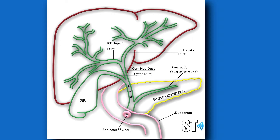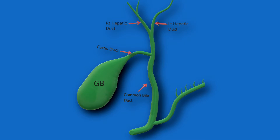The liver has all these bile ducts that converge into the right and left hepatic duct. That then meets with the cystic duct, which is a duct that comes from the gallbladder. The confluence of that becomes the common bile duct, which then leaves the liver along with the portal vein and hepatic artery — well, the portal vein and hepatic artery are entering the liver, and the common bile duct is leaving. The common bile duct then joins with the pancreatic duct and goes on into the duodenum.